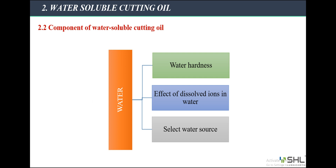Permanent hardness can only be changed by complicated and expensive methods. The second parameter is the effect of dissolved ions in water. Regarding alkalinity, there are two types: permanent alkalinity and temporary alkalinity. Water-soluble cutting oils generally work well at pH from 8.8 to 9.5; they require a certain amount of alkali for good cleaning performance, corrosion control, and increased resistance to rot. However, high alkalinity will increase the pH, causing metal surface staining and skin irritation. Regarding chloride ions, when the concentration of chloride in water mixed with cutting oil is above 50 ppm, it makes it more difficult for the product to control rust and corrosion.